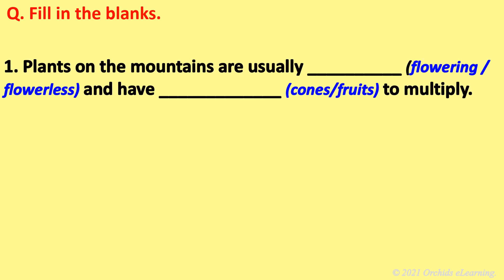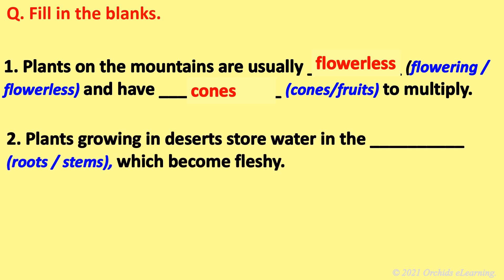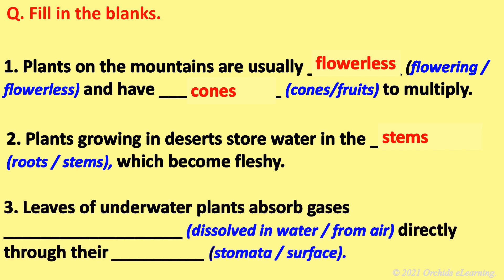Fill in the blanks. Plants on the mountains are usually flowerless and have cones to multiply. Plants growing in deserts store water in the stems, which become fleshy. Leaves of underwater plants absorb gases dissolved in water directly through their surface.